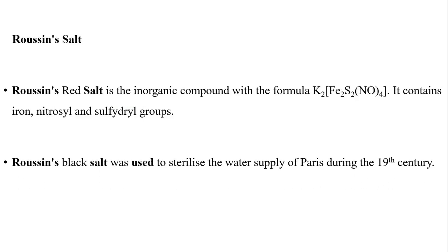Roussin's salts are inorganic compounds with the formula K2Fe2S2(NO)4. They contain iron, nitrosyl, and sulfhydryl groups. Roussin's black salt was historically used to sterilize the water supply of villages during the 19th century.